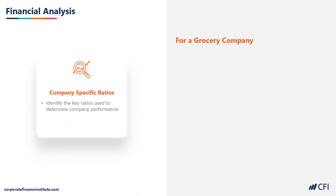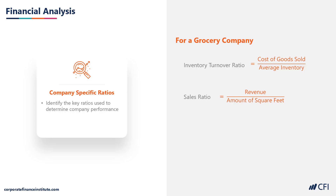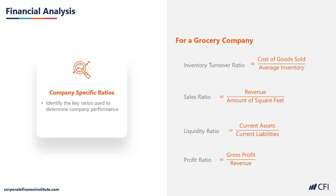Let's look at an example of company-specific ratios for a grocery business. We would want to look at the inventory turnover ratio to see how quickly inventory is sold. We'd want to look at revenue per square foot — a very good indicator of how much a company can sell given a certain store size. Liquidity ratios are also very important, looking at the company's current assets relative to its current liabilities. And finally, profit margin ratios such as gross profit divided by revenue or net profit divided by revenue.